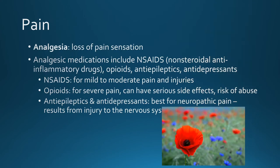Pain is a signal sent to your nervous system by the body's tissues suggesting something might be wrong. It can be acute, lasting a short duration following an injury, or chronic, lasting days, months, or even years. The loss of pain sensation is called analgesia, and a number of analgesic medications are used depending on the kind of pain — NSAIDs, opioids, anti-epileptics, or antidepressants. For mild to moderate pain, NSAIDs are used. For severe pain, opioids are used, though they carry serious side effects and risk of abuse. Anti-epileptics and antidepressants can be useful for neuropathic pain.